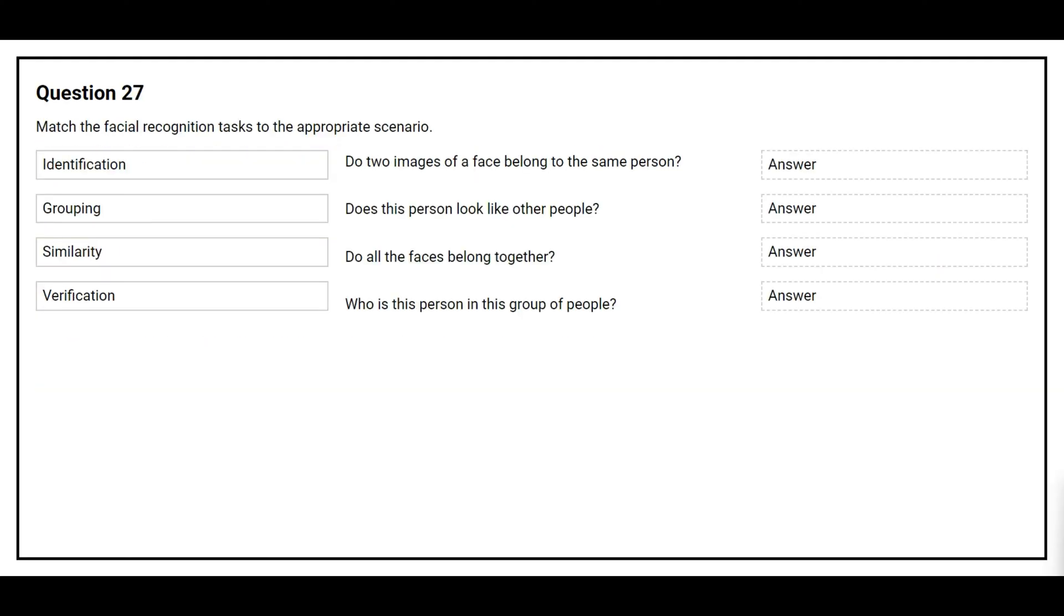Question number 27. Match the facial recognition tasks to the appropriate scenario. The first scenario is, do two images of a face belong to the same person? The correct answer is verification. The second scenario is, does this person look like other people? The correct answer is similarity. The third scenario is, do all the faces belong together? The correct answer is grouping. The fourth scenario is, who is this person in this group of people? The correct answer is identification.